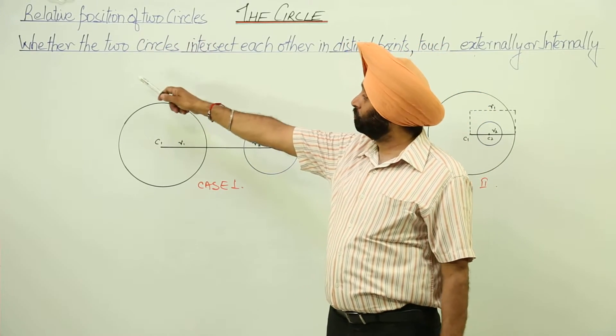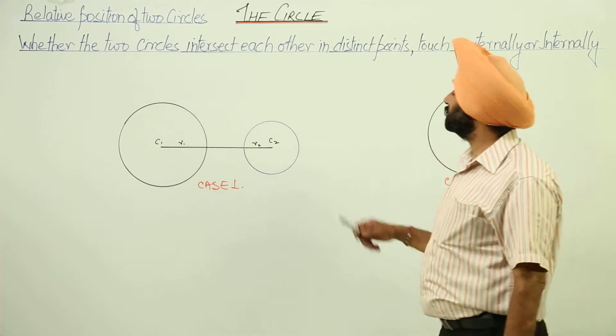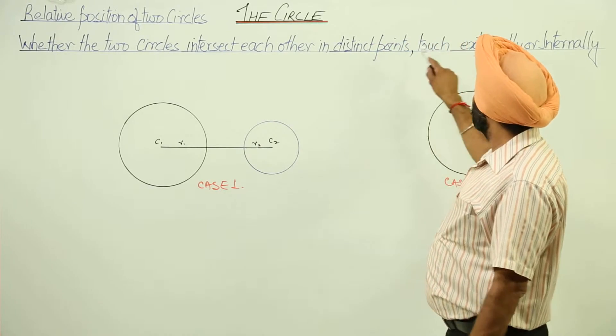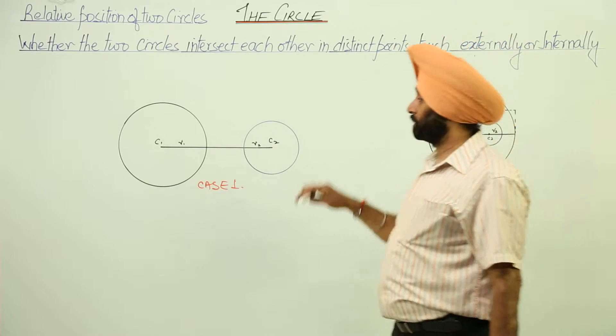Relative position of two circles: whether the two circles intersect each other in two distinct points, touch each other externally or internally.